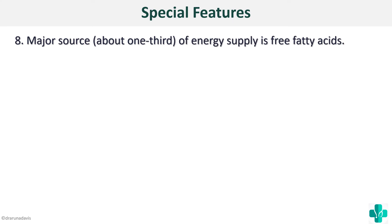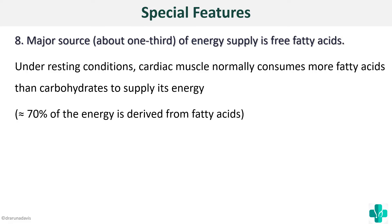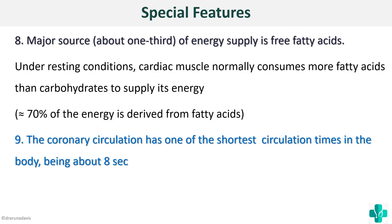Another special feature is that the major source of energy for the heart is free fatty acids. We usually think carbohydrates are the major energy source for most tissues, but for the heart, under resting conditions, cardiac muscle normally consumes more fatty acids than carbohydrates — around 70 percent of energy is derived from fatty acids. Another feature is that coronary circulation has one of the shortest circulation times in the body, being around eight seconds.